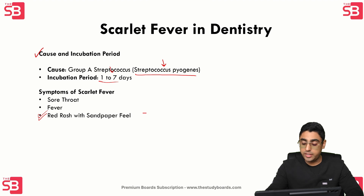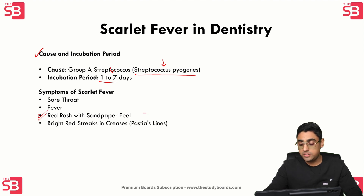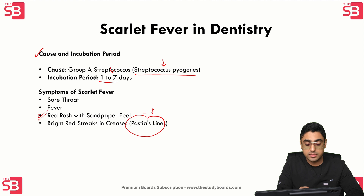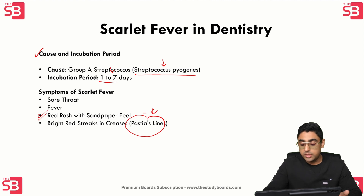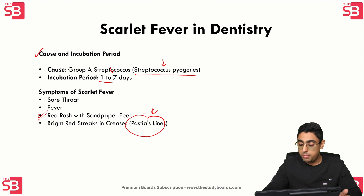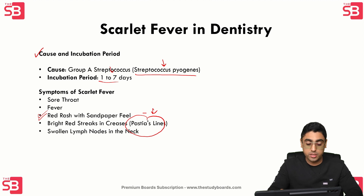Another important point: there are bright red streaks in the skin creases called Pastia's lines. These streaks are typically found in the underarm, elbow, and groin areas.